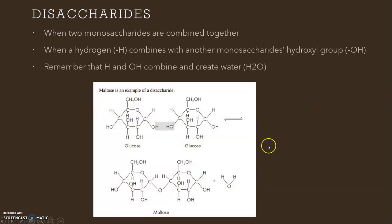Maltose is an example of a disaccharide. Maltose is created when you combine two glucose monosaccharides, and they're going to create this disaccharide. When they combine, this H group and this OH group create water, plus it makes this maltose.